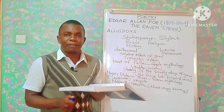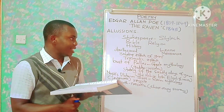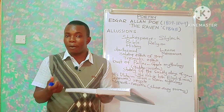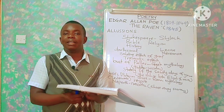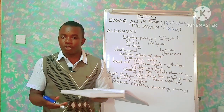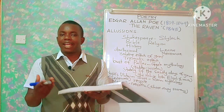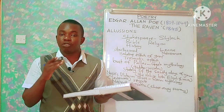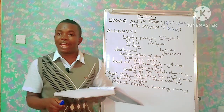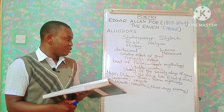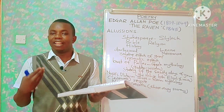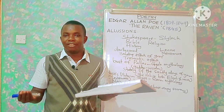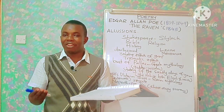Those are the major allusions present in the poem. We can see that most of them are from Greek mythology, and that also tells us something about Edgar Allan Poe — he is always a lover of Greek mythology and also a lover of the Bible. In some of his works, like 'The Cask of Amontillado' and other short stories like 'Macabre,' we are going to find his biblical allusions as well as mythological allusions. That is a discussion of the major allusions found in Edgar Allan Poe's 'The Raven.' Until next time on poetry — thank you for watching.